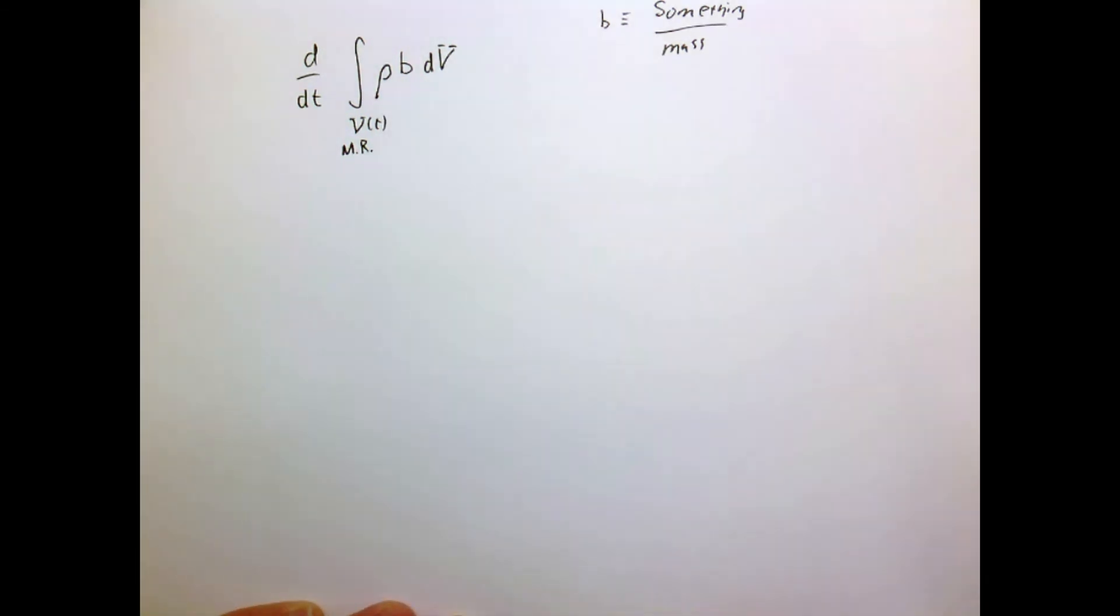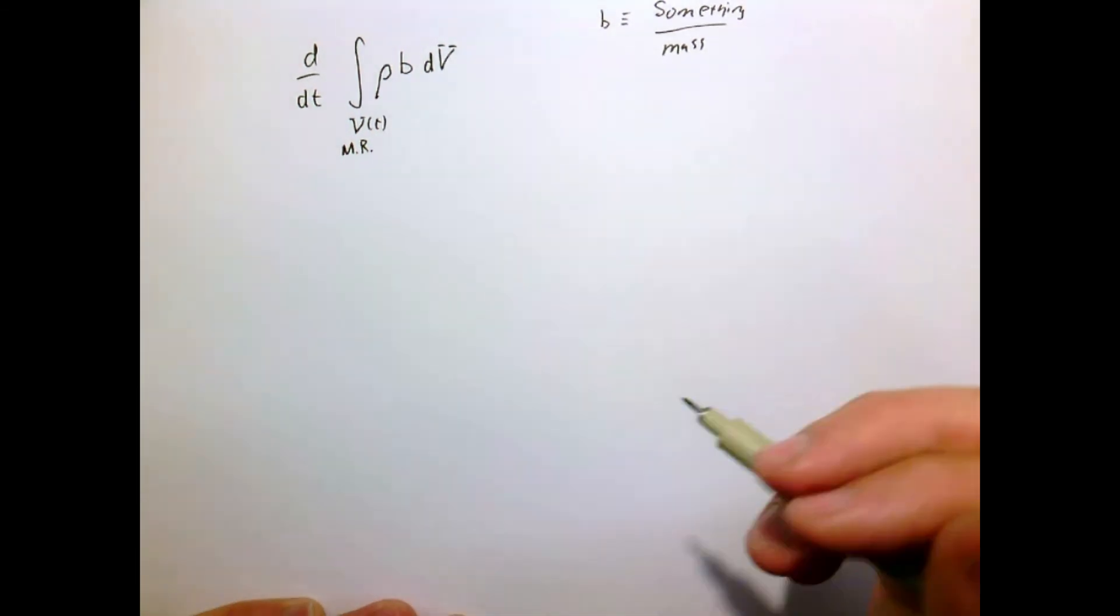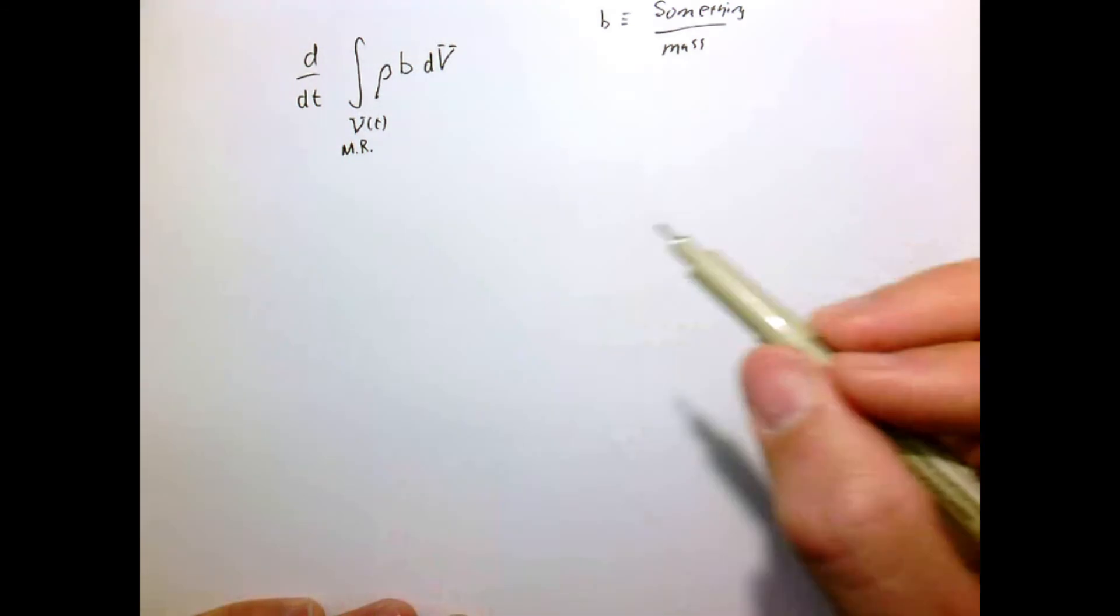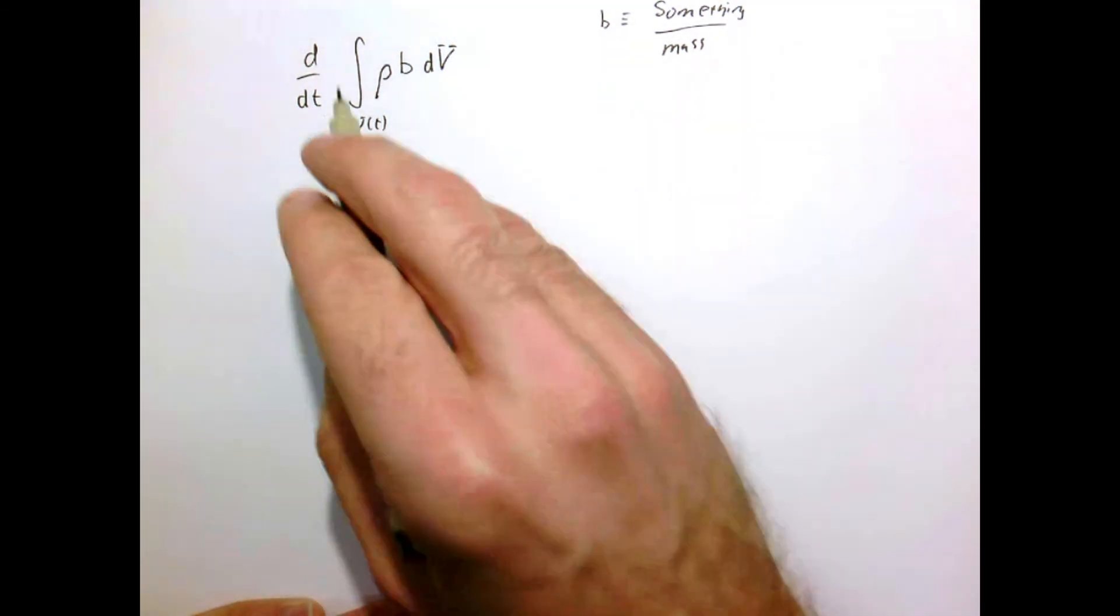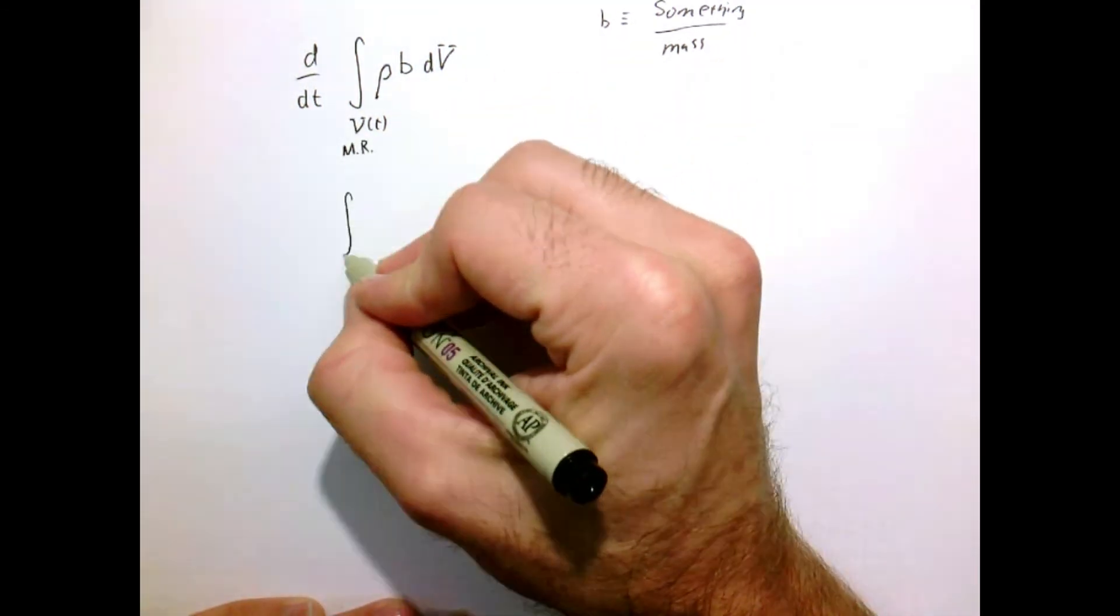And so we'll often have integrals where we have something on a per unit mass basis. So right now I'm just going to call it b. And we'll derive a result which we'll use extensively in some of our later conservation laws. So let's just apply what we know so far.